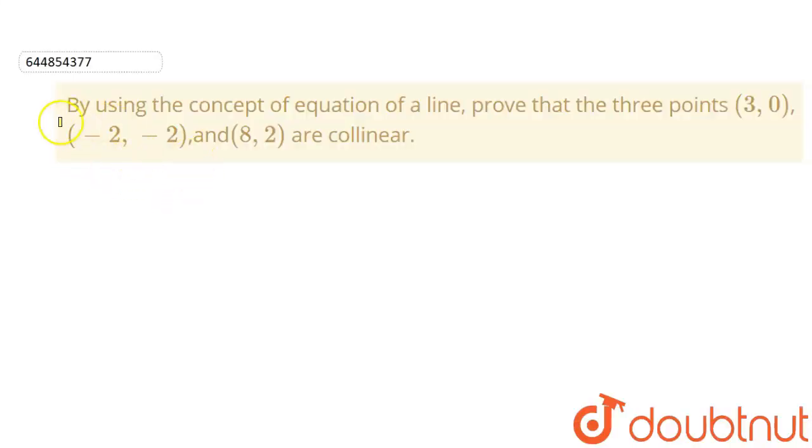Hello student, in this question we are given: by using the concept of equation of line, prove that the three points (3,0), (-2,-2), and (8,2) are collinear.